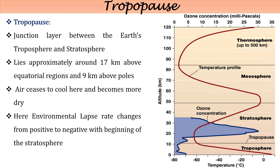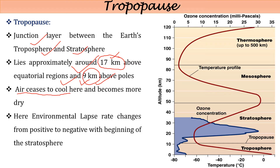The tropopause is a junction layer between the troposphere and stratosphere. It lies around 17 km above the equatorial region and 9 km above the poles, because the equatorial region receives more solar radiation and shows a higher convective process. Air cools and becomes drier here, and the environmental lapse rate changes suddenly from positive to negative at the beginning of the stratosphere.